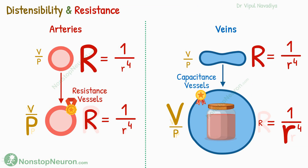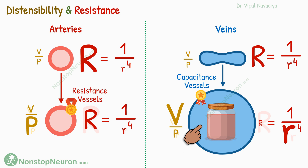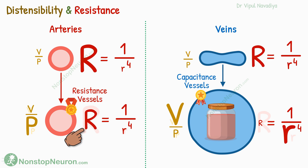Now summary: the veins expand much even at slight pressure changes, so that they can hold large quantities of blood at low pressure. So they are called capacitance vessels. Arteries, on the other hand, don't expand much and continue to provide high resistance even with a marked increase in pressure. So they are called resistance vessels.